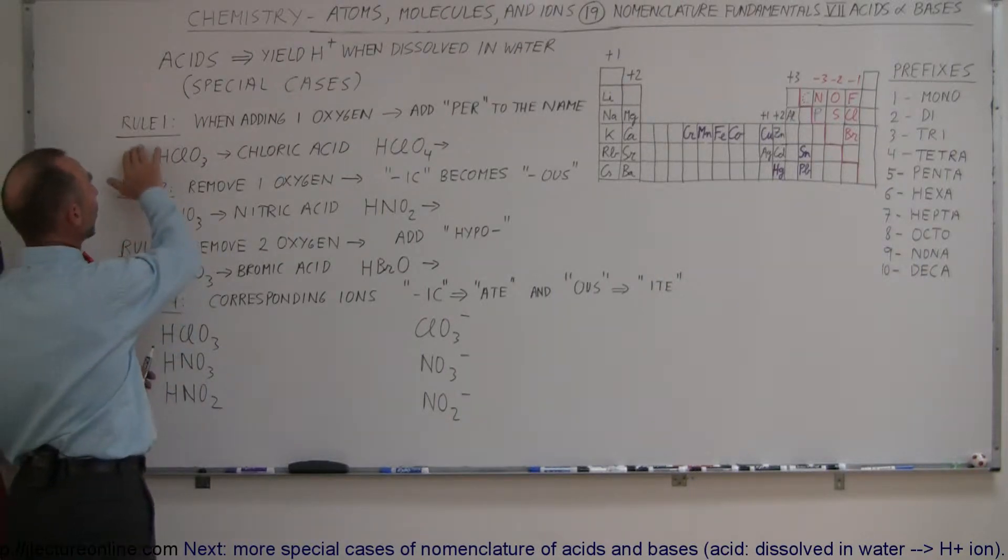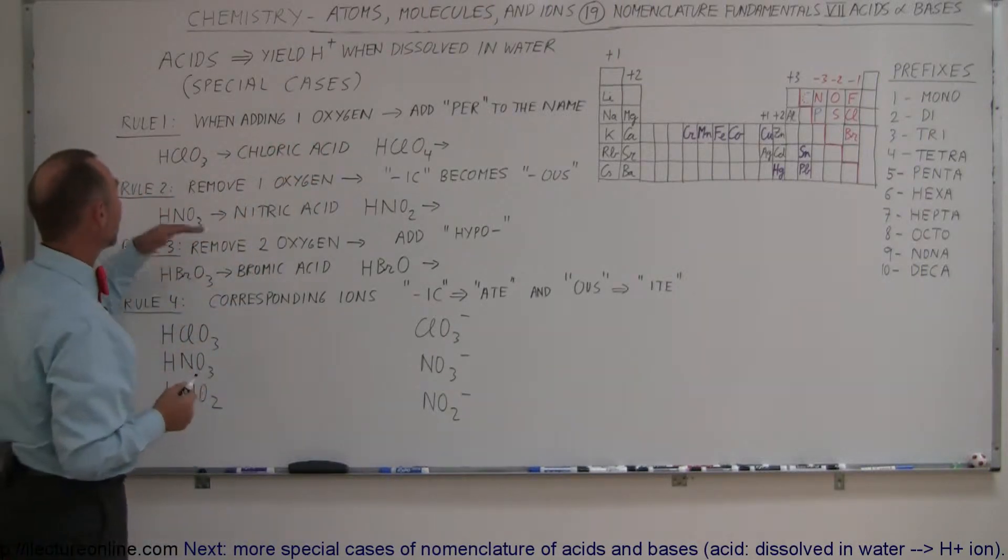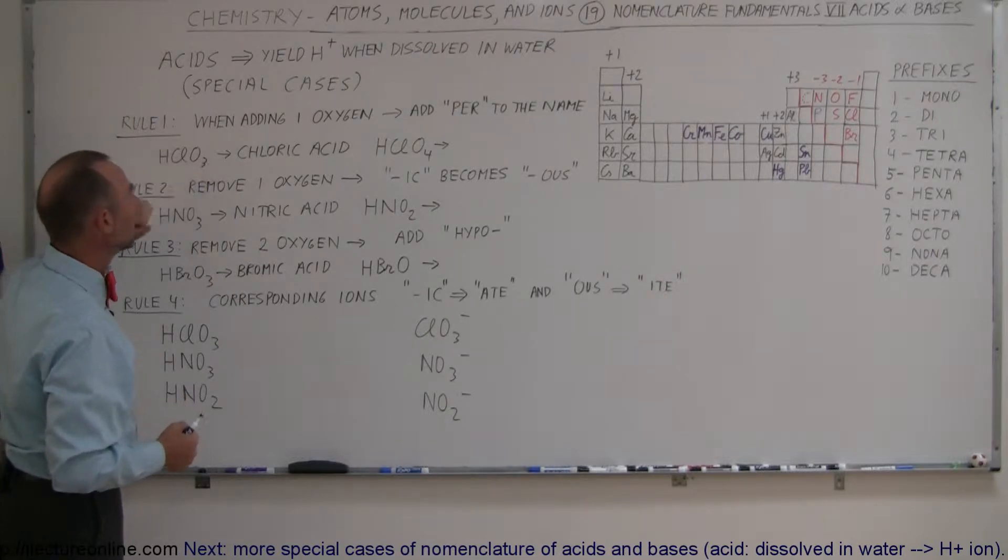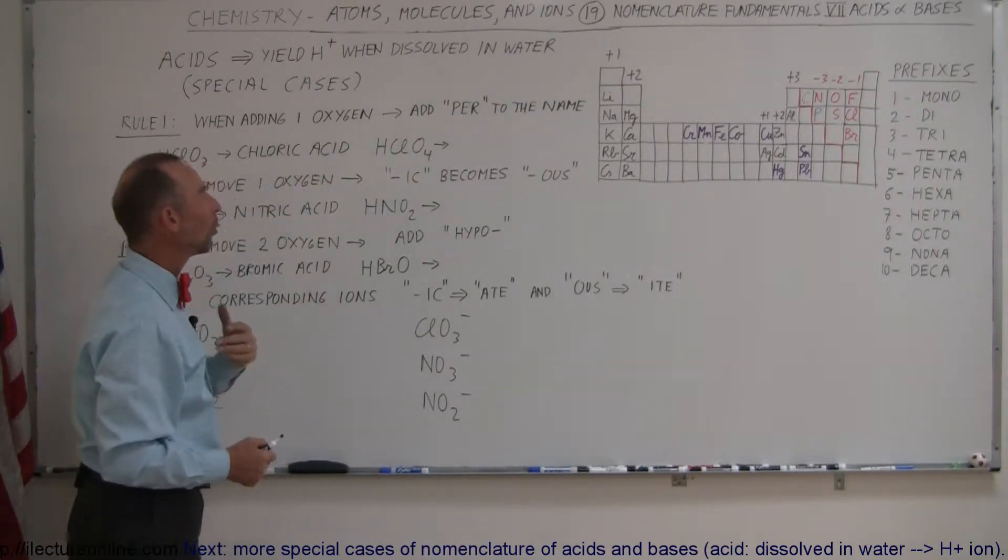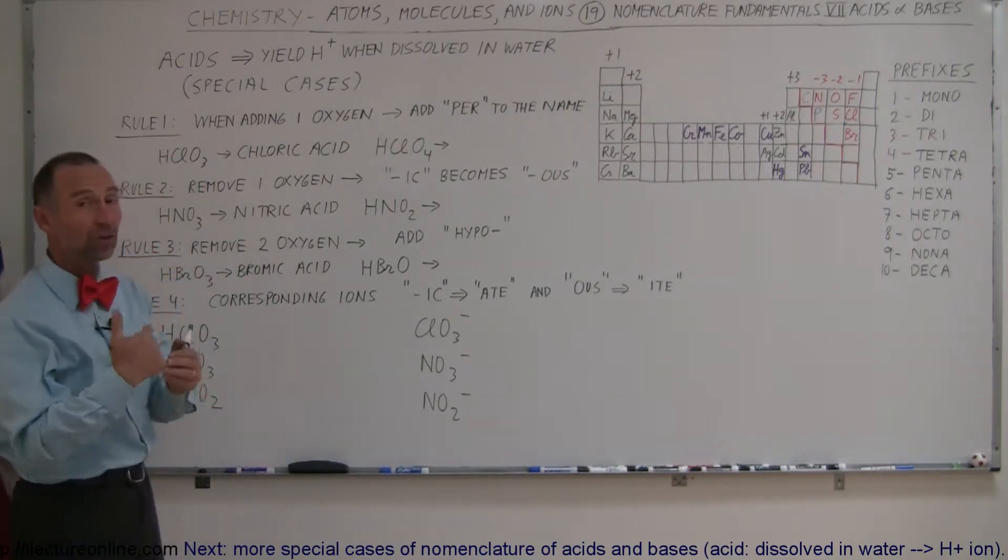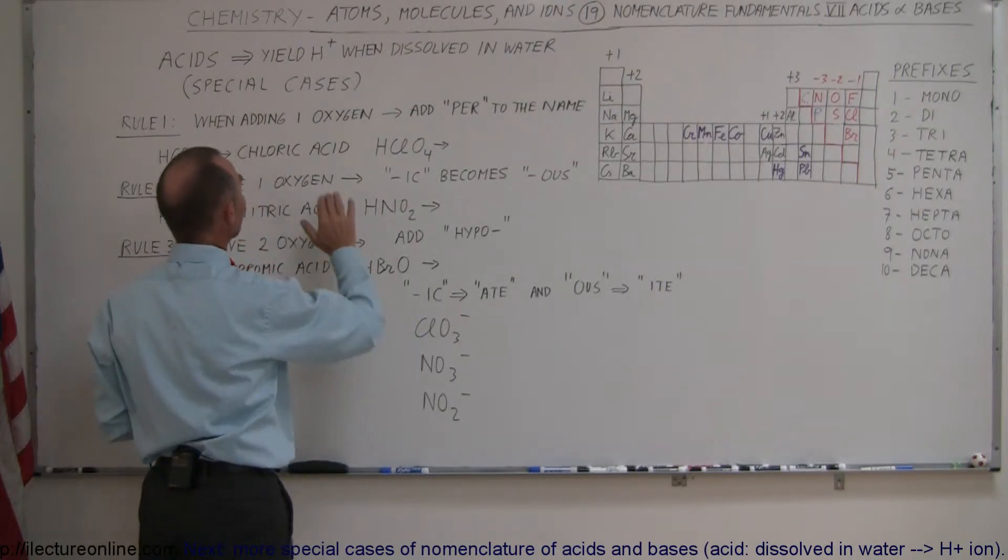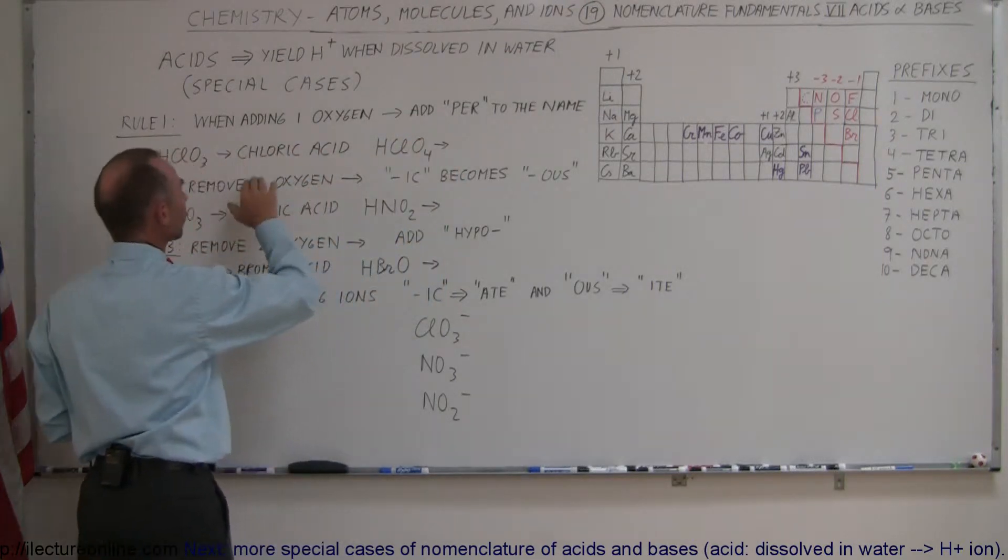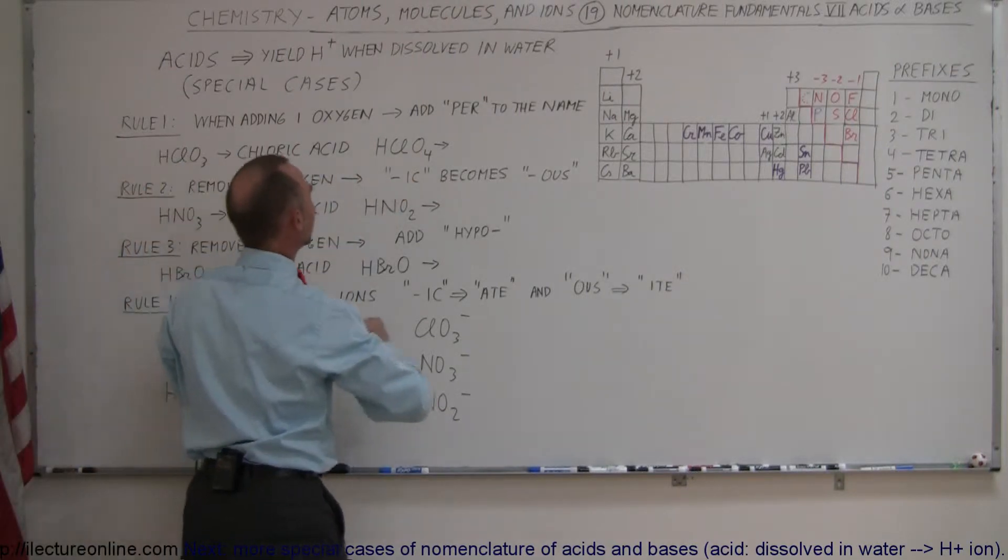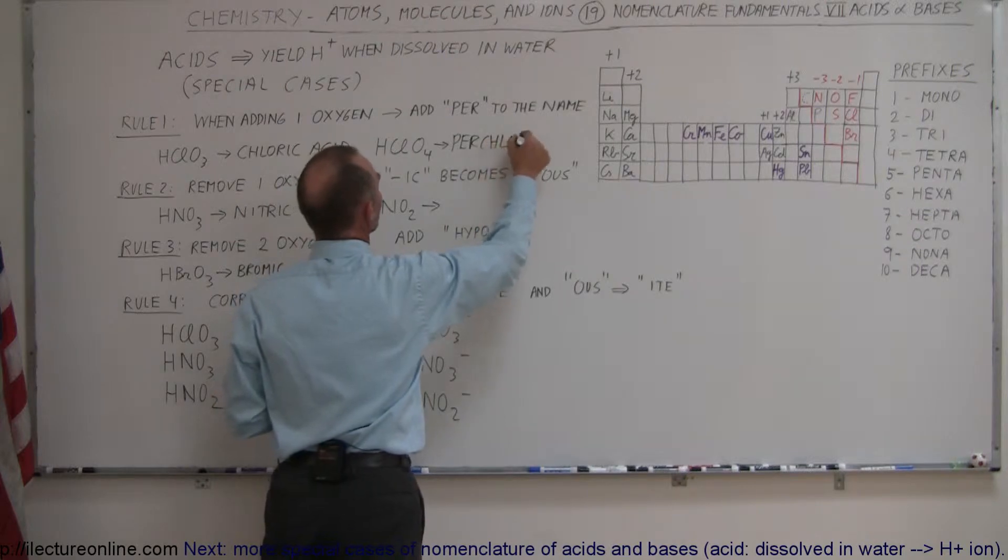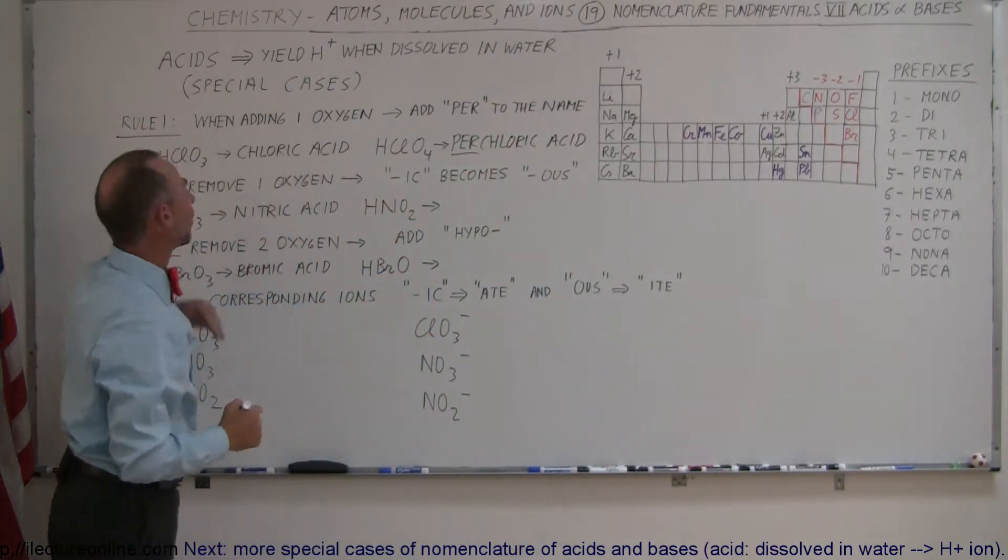For example, rule one: when we're adding an additional oxygen to what was an acid already, in this case we have chloric acid, HClO3, and we're going to now add an additional oxygen to this. What do we name that acid? Because that also will disassociate the hydrogen when placed into water. We add 'per' to the name, so we're going to call this perchloric acid because there's an additional oxygen. We add this to the original name of chloric acid.